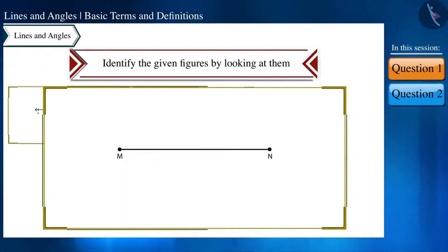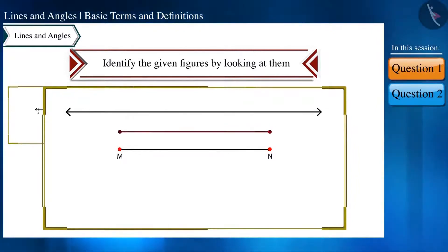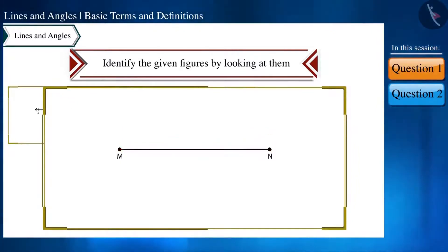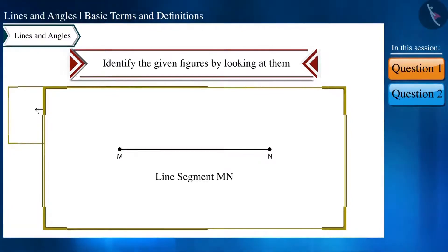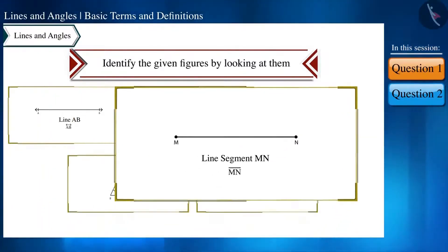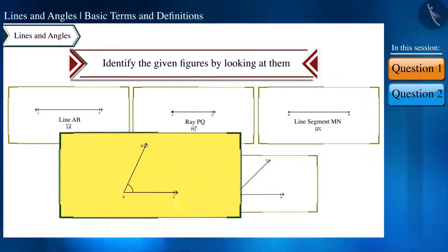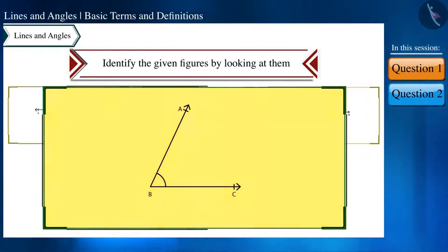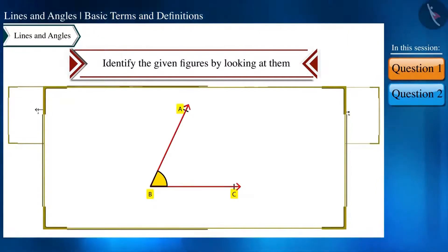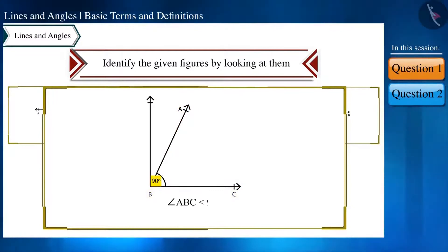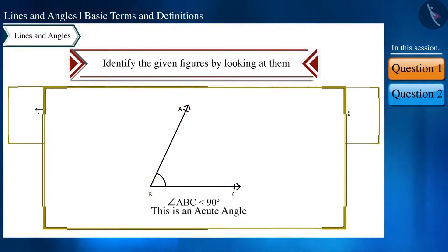In the third figure, both ends have points, so this is a line segment — line segment MN. In the next figure, angle ABC is given and its measure is clearly less than 90 degrees, so angle ABC is an acute angle.